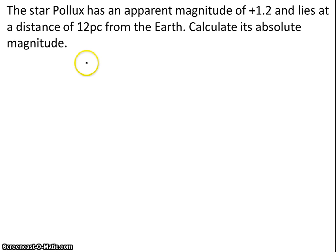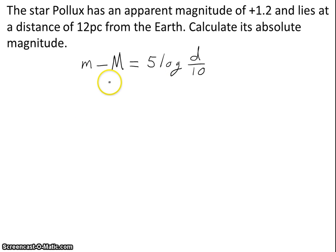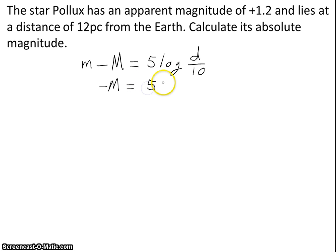We can start with the equation from our data book: apparent magnitude minus absolute magnitude equals 5 log of distance over 10. Remember that apparent magnitude is a lowercase m and absolute magnitude is an uppercase M. I'm going to start by solving for absolute magnitude, uppercase M, by subtracting apparent magnitude from both sides.